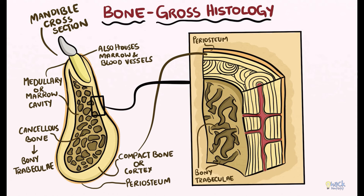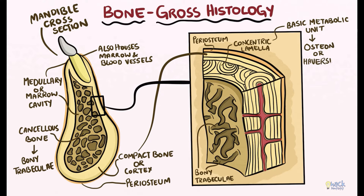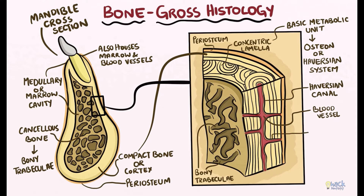The bulk of the cortical bone is made of concentric lamellae, which make up the basic metabolic unit of bone and are called osteons or Haversian systems. These Haversian systems have cylindrical canals called Haversian canals housing blood vessels and nerves. These Haversian canals communicate with each other as well as the periosteum and the marrow space via canals called Volkmann canals, which also contain blood vessels. This system of interconnected Haversian and Volkmann canals supplies nutrients and nourishes the bone.